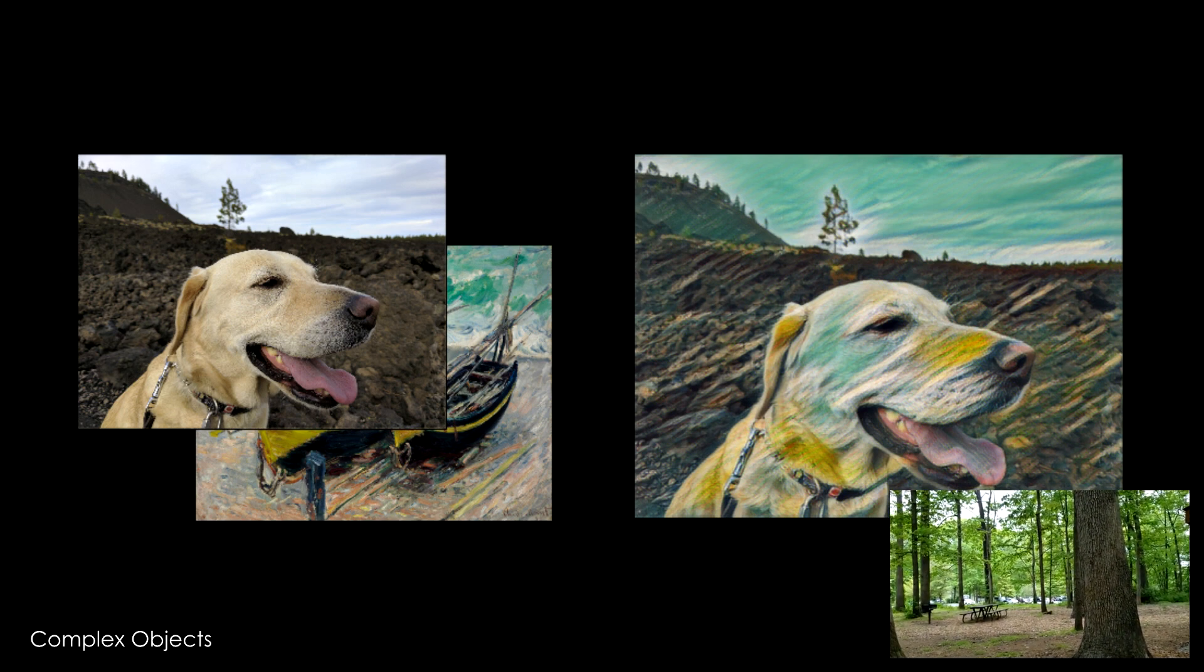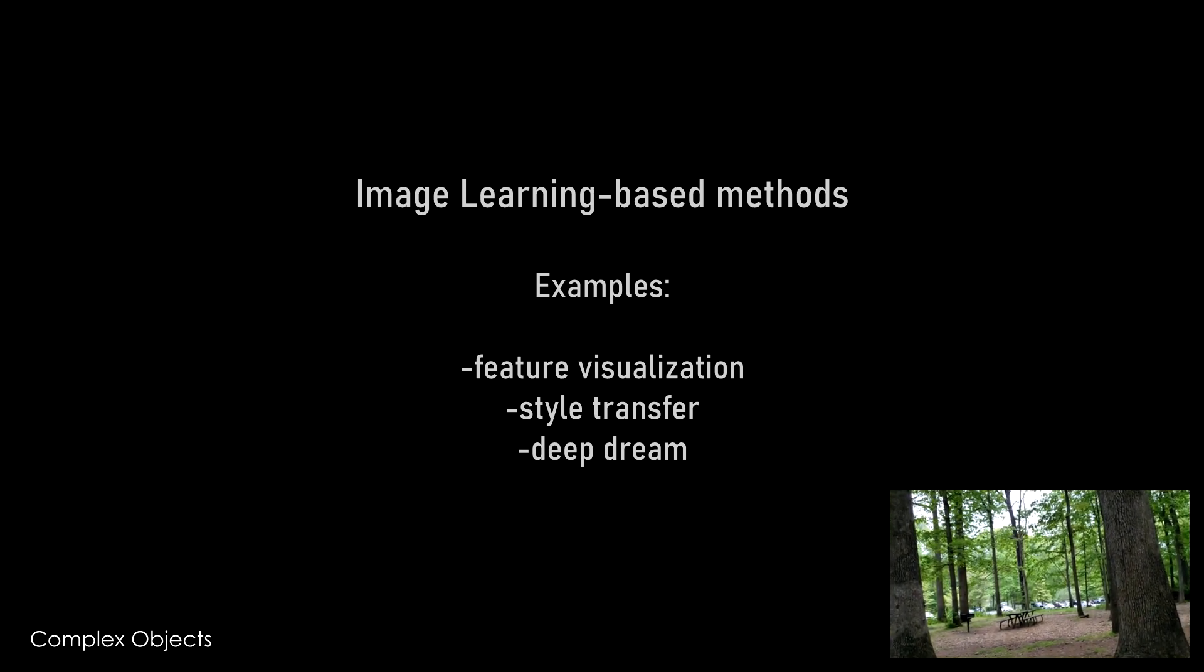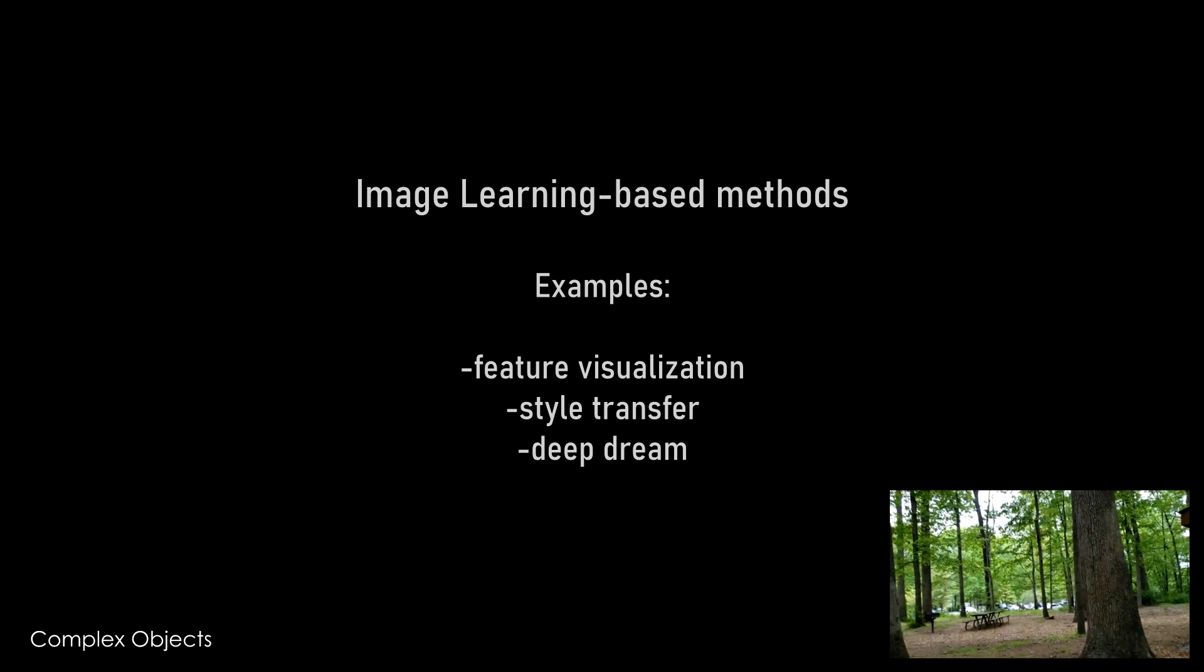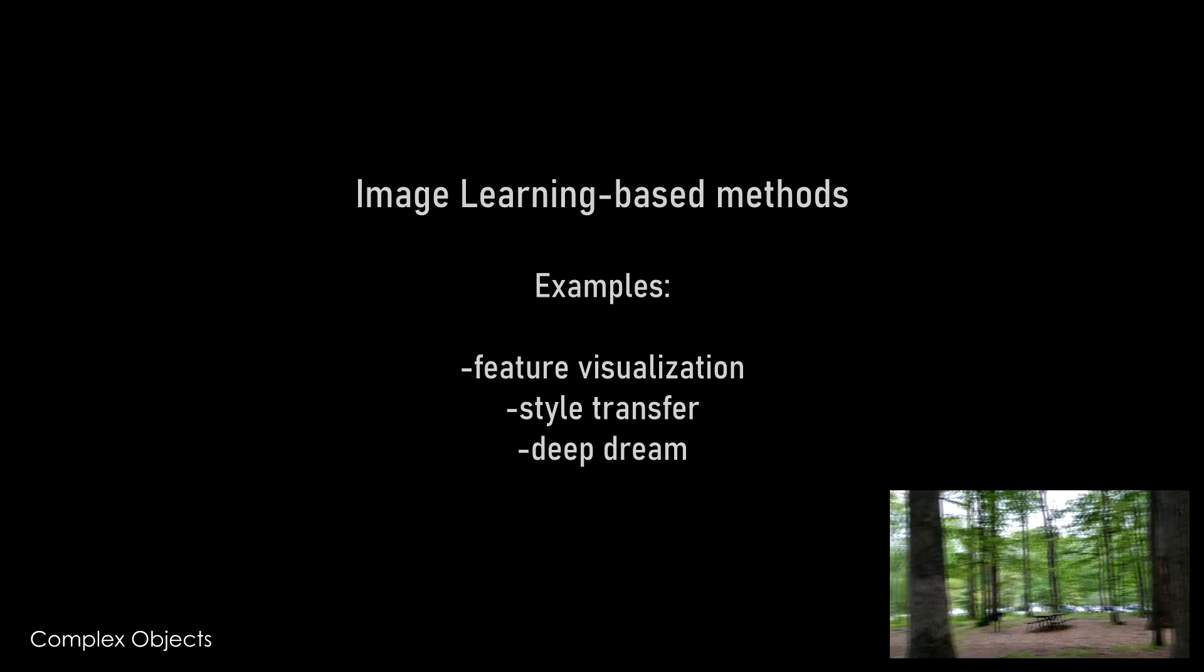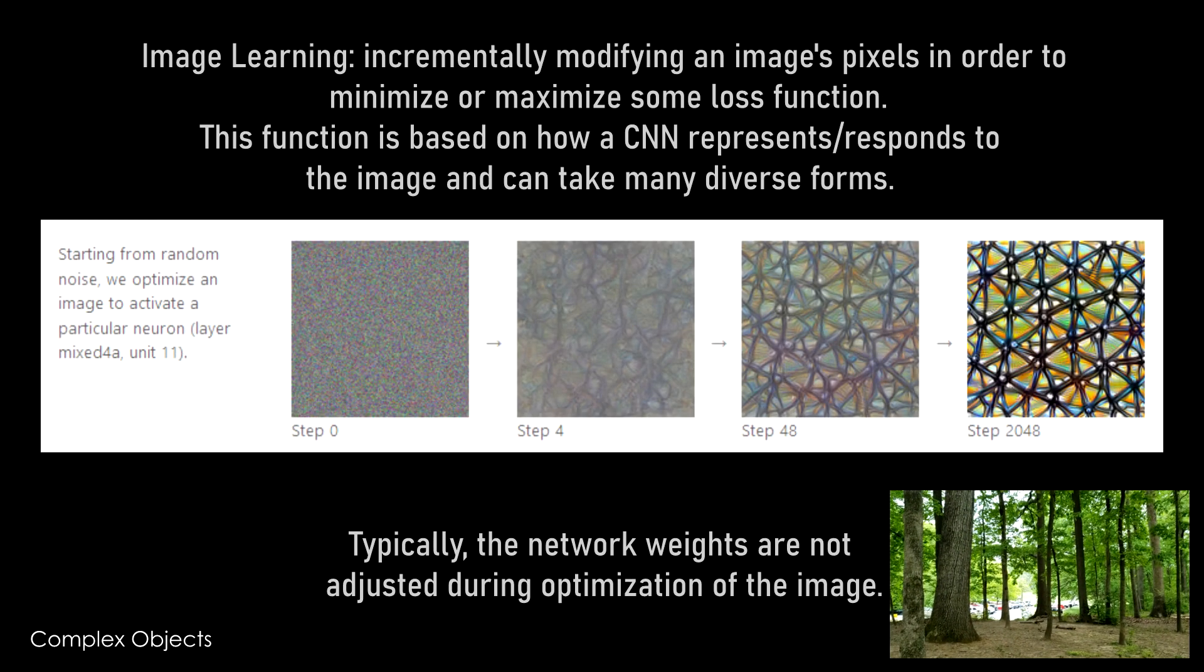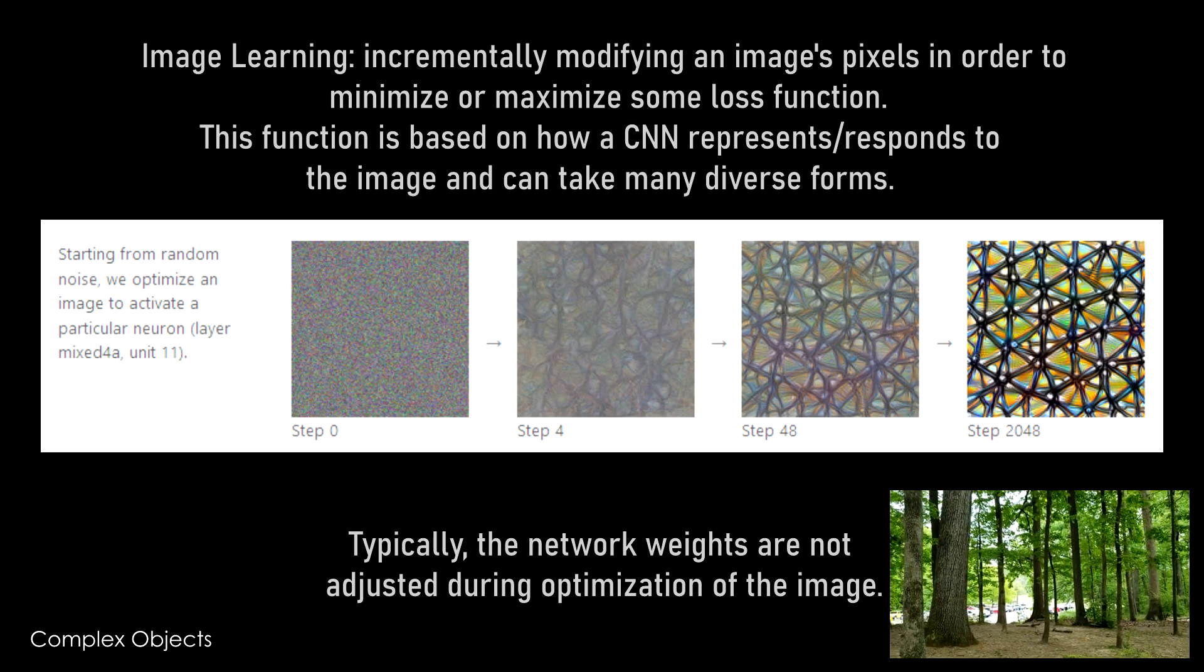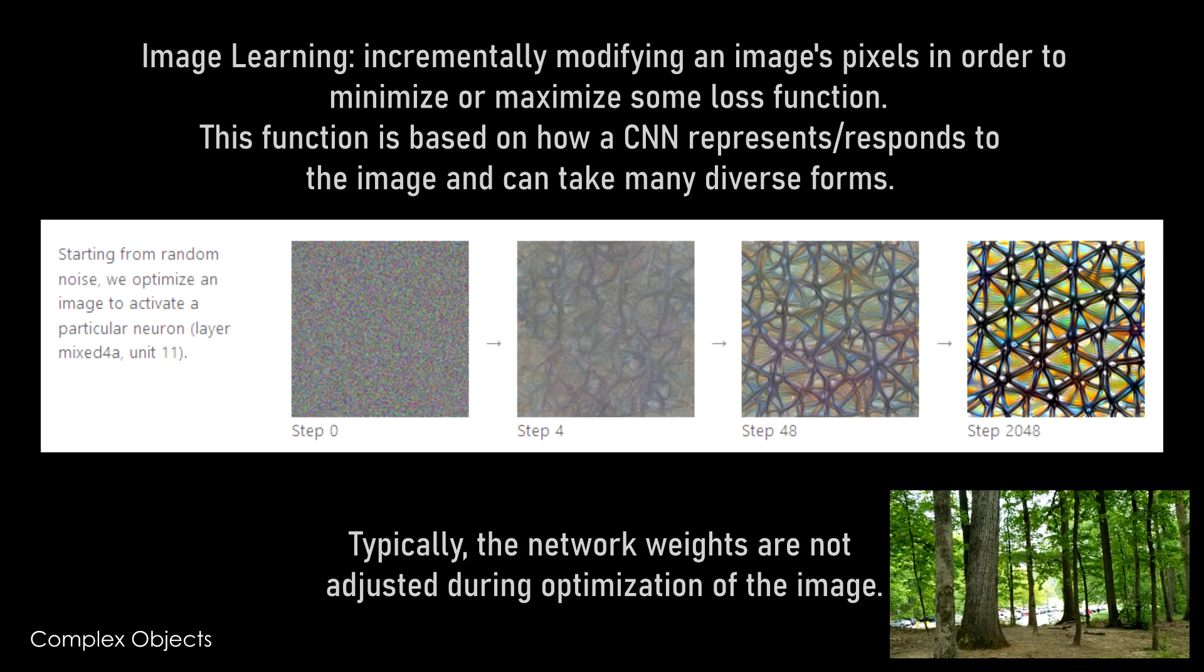And style transfer has a, is in the same category I would say as this feature or the filter visualization making images and textures of creating images that strongly activate some particular filter in a deeper layer of the network or in some layer of the network. Both of these methods use what I would call image learning in the sense of iteratively building up an image starting from complete noise, you start applying gradients to this image.